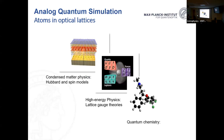I want to talk about three kinds of problems: condensed matter physics, high-energy physics, and quantum chemistry. There are proposals for simulating all of these with analog quantum simulators, and the level of difficulty increases in that order. Condensed matter is relatively straightforward on paper, high-energy physics gets much more difficult — I'll explain why — and quantum chemistry is what I'll spend the most time on.